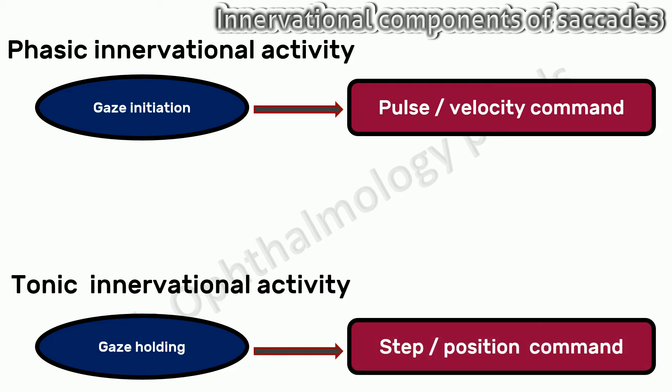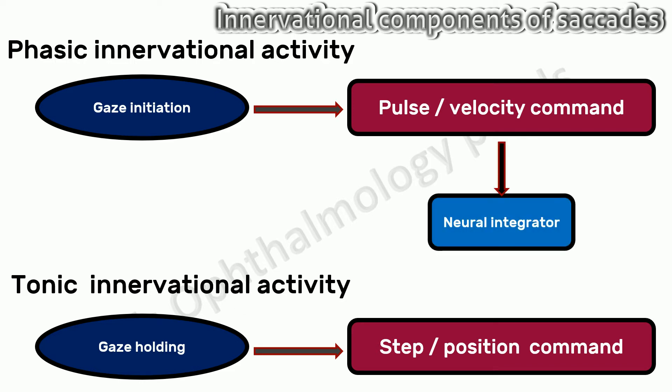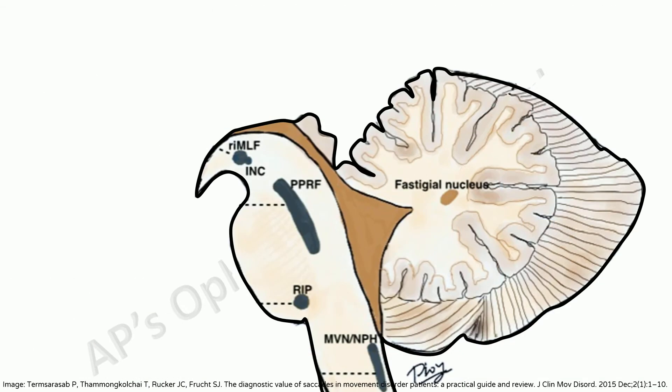When this pulse-step innervation is appropriately matched and integrated with regard to velocity and final position, the eyes move accurately to their new position and are held there. The pulse signal is projected to a neural integrator that mathematically converts the pulse to a step signal, thus allowing the eyes to be held steadily in the eccentric position.